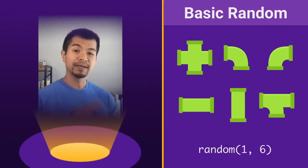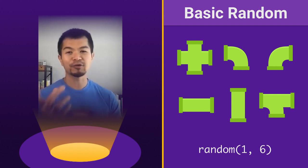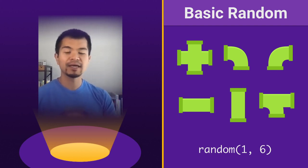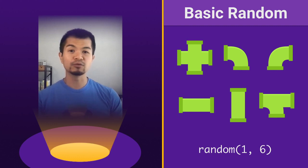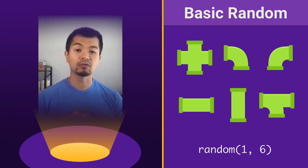All right so here's basic random. We've got five, six green pipes on the right here: the cross pipe, the two corners, a straight horizontal, straight vertical, and the three prong pipe. So here if you were to get randomly from this bag of pipes it would give an equal chance of getting any one of these pipes each time you call random, like random(1, 6) just as an example.